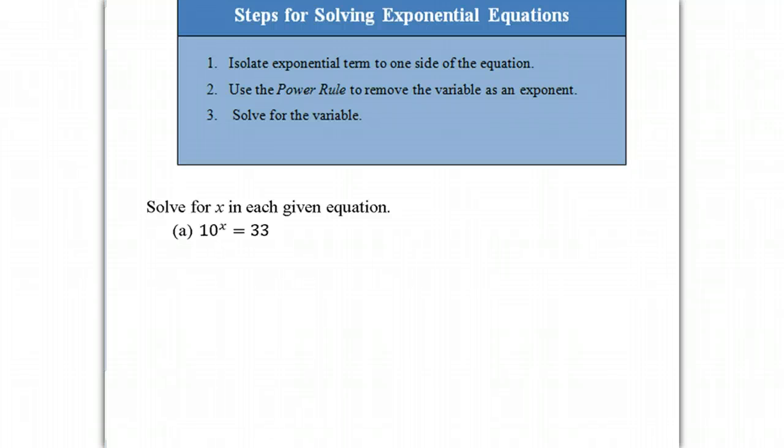So using the power rule, well, before we use the power rule, what we are allowed to do since it's an equation is find a log of both sides. So log of 10 to the x is equal to log of 33. In equations, as long as you do the same thing to both sides of the equal sign, it is legitimate. So this is perfectly legitimate: log of 10 to the x is equal to log of 33.